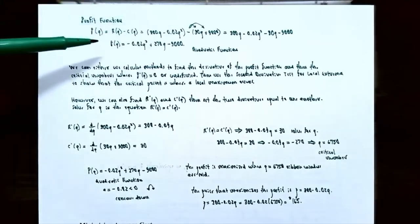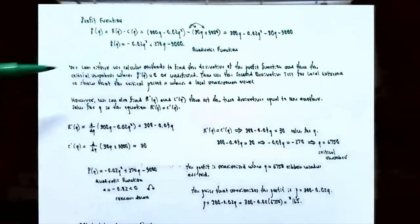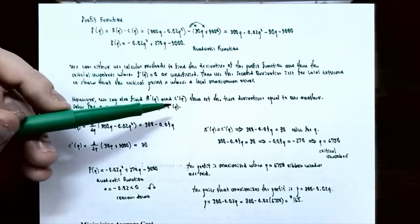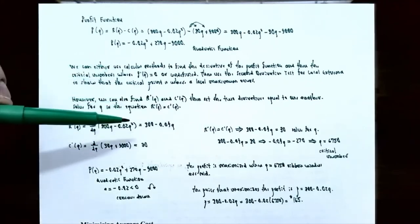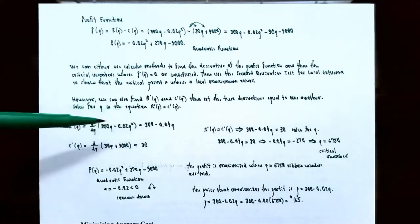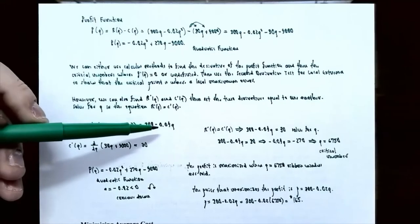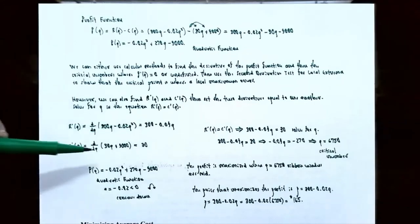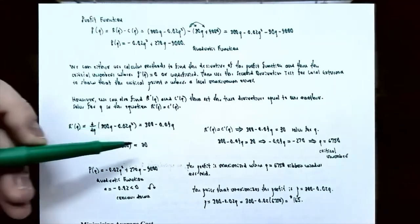Now let's use the new method: find the marginal revenue and marginal cost, then set them equal. The revenue function R(q) = 300q − 0.02q², so its derivative (marginal revenue) is R′(q) = 300 − 0.04q. The cost function C(q) = 30q + 9,000, so its derivative (marginal cost) is C′(q) = 30.